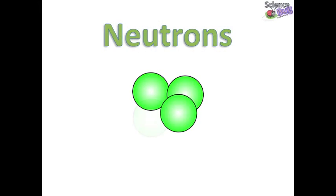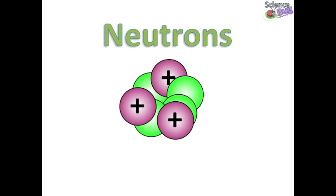But neutrons do have an important role. They keep the protons together in the nucleus. They're essentially the glue. The more protons are in the atom, the more glue, in other words, the more neutrons are needed to keep the nucleus together. And the protons and neutrons pretty much make up the mass of the entire atom.